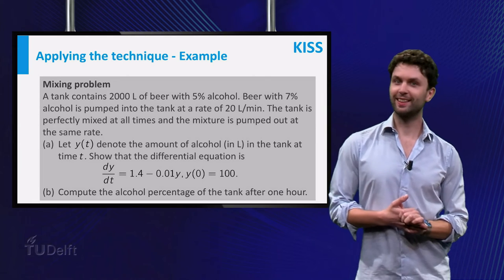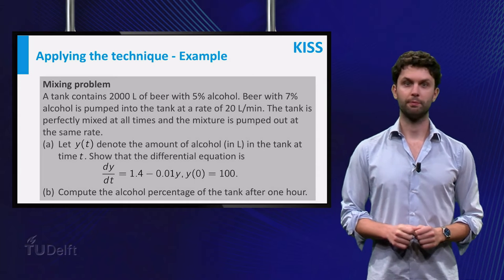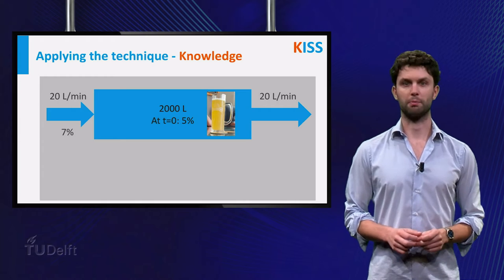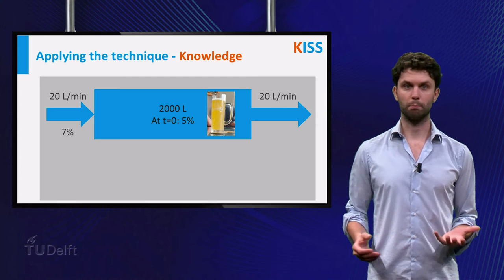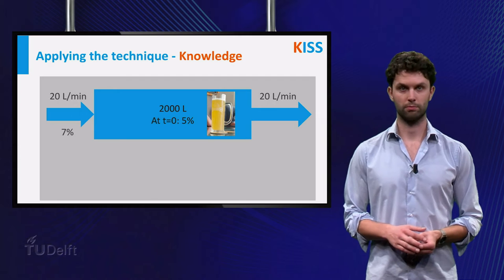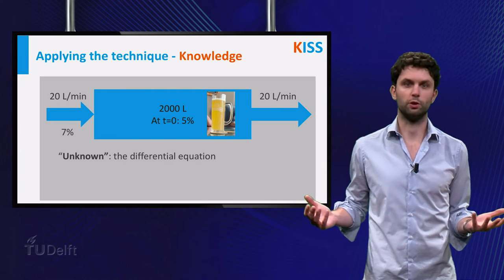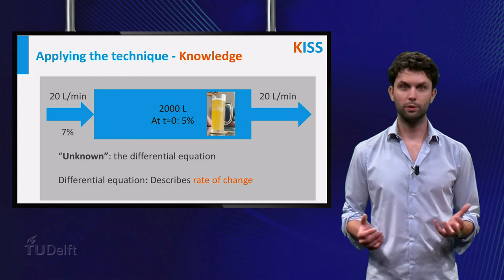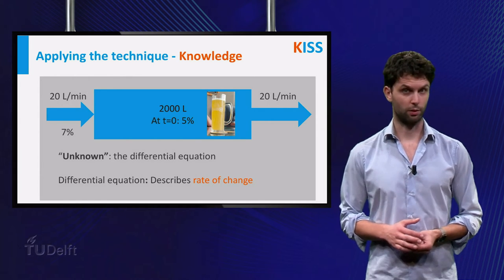Let us apply the KISS technique to the first part of the question: Show that this differential equation indeed describes the given mixing problem. We start with the first step, knowledge. For this question, it is instructive to draw a picture like this, and use it to denote the given quantities in the question. The unknown, actually you already know what it should be in this case, is the differential equation. And recall that the differential equation is an equation that describes a rate of change of a quantity.